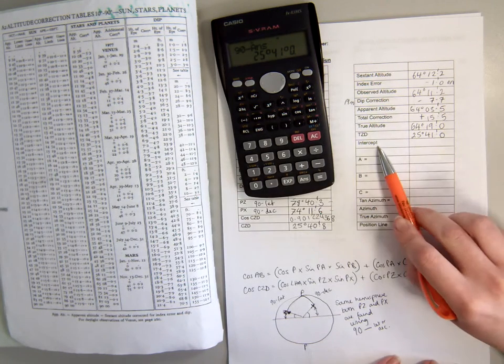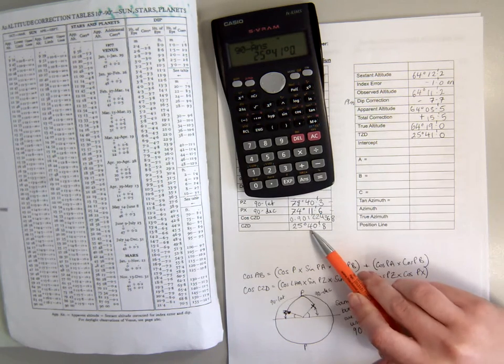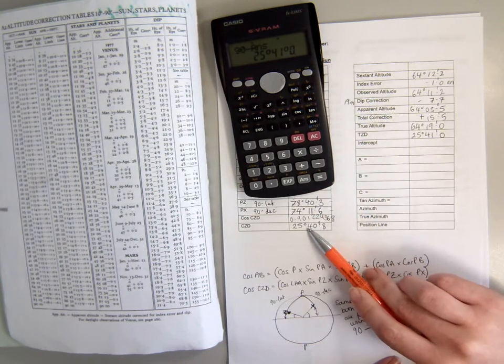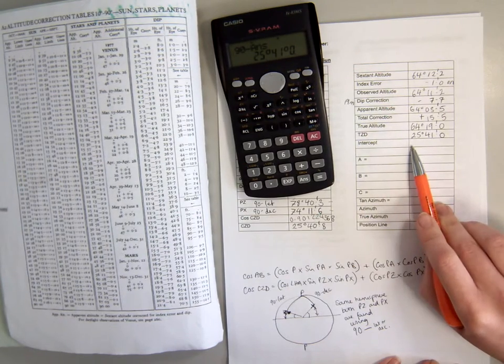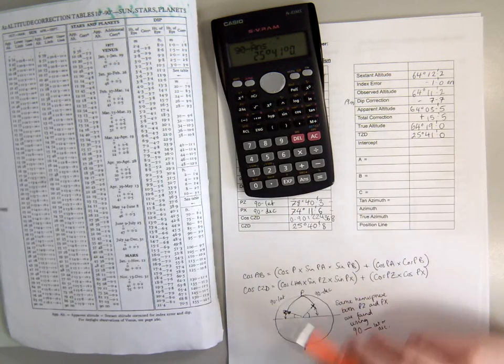Finally, we need the intercept. To find the intercept we need to compare TZD with CZD, and the rule is that if the TZD is smaller than the CZD then we're going to name the intercept towards. But if the TZD is greater than the CZD, we're going to name the intercept away.